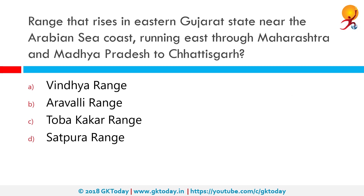Which is the range that rises in eastern Gujarat state near the Arabian Sea coast, running east through Maharashtra and Madhya Pradesh to Chhattisgarh? The correct answer is the Satpura range. The Satpura range parallels the Vindhya range to the north, and these two east-west ranges divide the Indian subcontinent into the Indo-Gangetic plain of northern India and the Deccan Plateau of the south. Satpura rises in eastern Gujarat near the Arabian Sea coast, running east through the border of Maharashtra and Madhya Pradesh to Chhattisgarh.